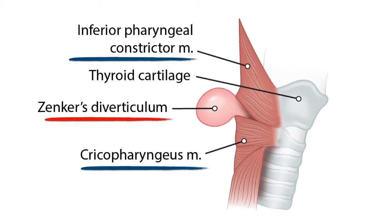Most of the time patients do not have any symptoms when the diverticulum is small. But when it becomes bigger they complain of difficulty swallowing and have symptoms of a cough because of regurgitation of fluid. They point to the neck as the area where they have difficulty swallowing. Typically, you diagnose this diverticulum by doing a barium swallow.